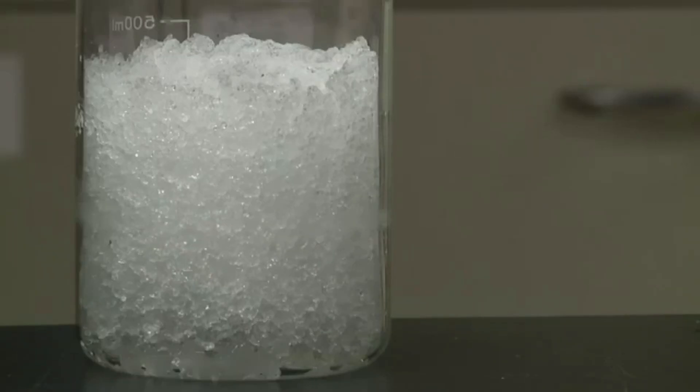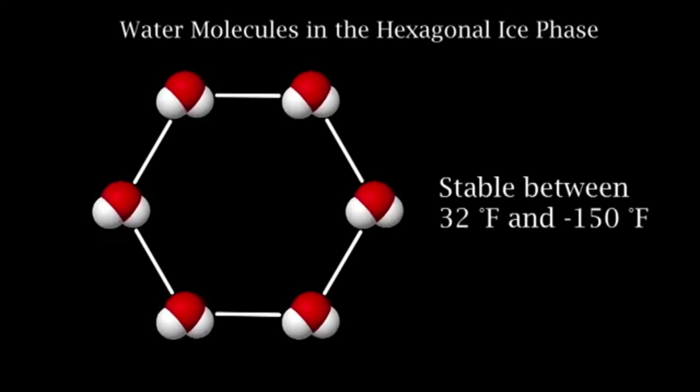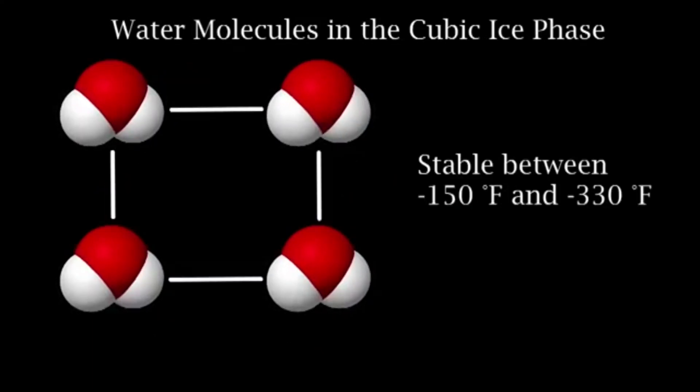But did you know there are actually multiple solid phases of ice? There is a hexagonal ice phase that is stable until negative 150 degrees Fahrenheit, and a cubic ice phase that is only stable below negative 150 degrees Fahrenheit.